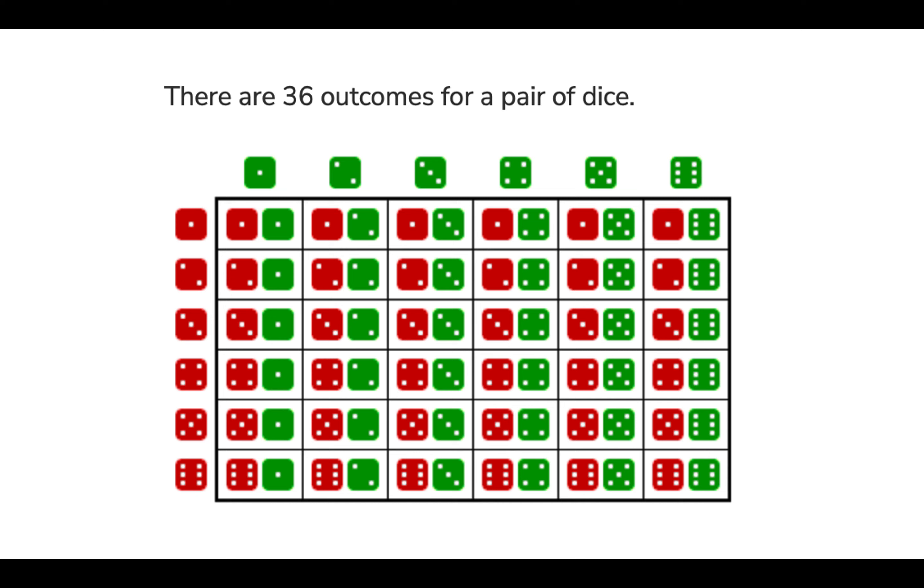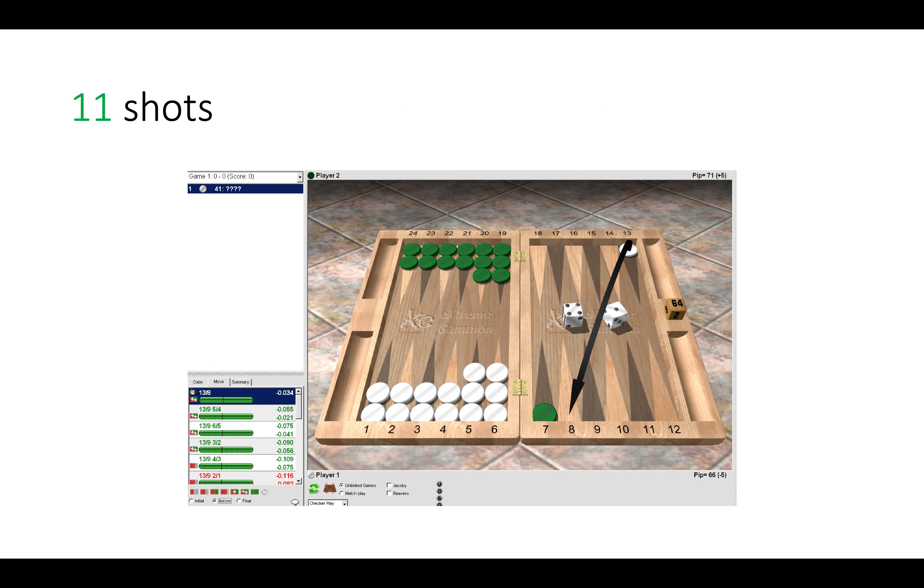So here we can estimate our probabilities of getting hit by calculating the number of shots, and that's how we can come to the understanding of where to leave our blot in the first position. Now the best place to leave it is on the eight point, because then we are only giving green 11 shots to hit us.